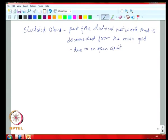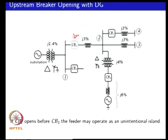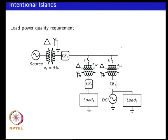An electrical islanding situation can be of two varieties: you can have an intentional island or an unintentional island. For an intentional island, the reason one would typically have it is for power quality reasons. The idea is you open a breaker which connects to the main grid, and then your source can actually feed a local load when there is poor power quality in the main grid. So you want to isolate yourself from the main grid and continue to feed higher quality power to your load.